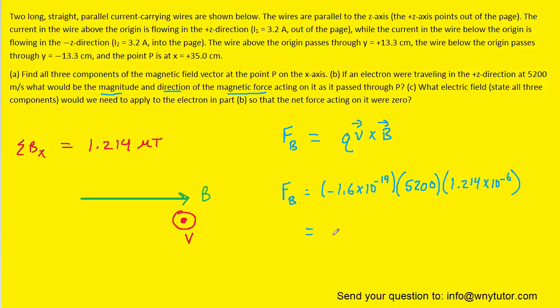When we simplify that, we get a value of negative 1.012 times 10 to the minus 21 newtons. The direction of that magnetic force is in the y direction. Because of the negative sign, we know that the electron is experiencing a magnetic force that tends to push it in this direction here.